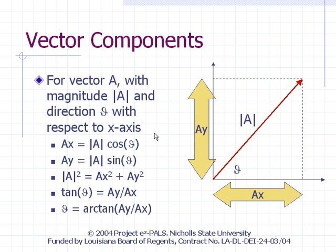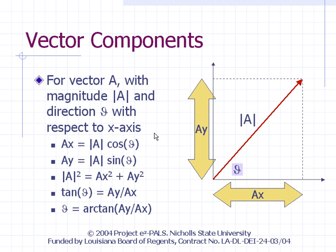Consider the red arrow shown here to represent a vector, which we will call vector A. It is convenient to describe a vector in reference to a Cartesian coordinate system. We imagine the tail of vector A to be at the origin. The magnitude of A, represented by uppercase A inside the absolute value symbol, is equal to the length of the red arrow. The direction of A, represented by lowercase theta, is the angle that the red arrow makes with the horizontal axis. The magnitude and direction of vector A are essentially the location of the tip of the arrow in polar coordinates.